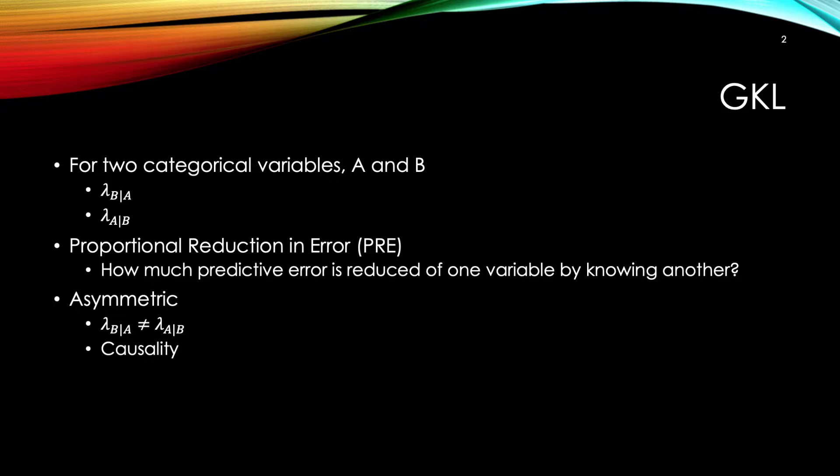In general, Lambda of B given A is not equal to Lambda of A given B. There could be cases when they are equal, but not in general. This asymmetric property of GKL is very interesting because it plays into causality.